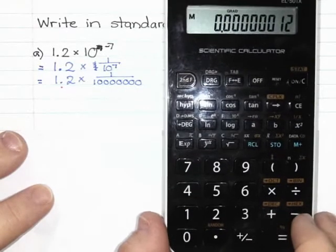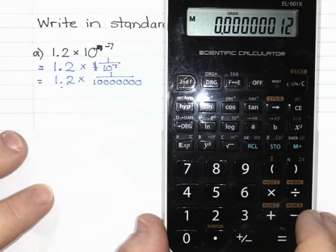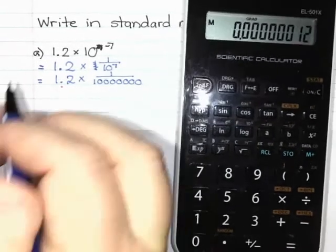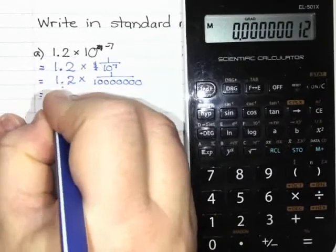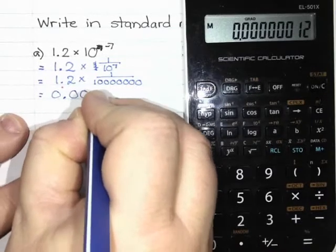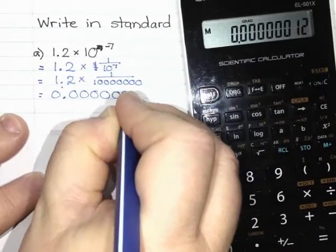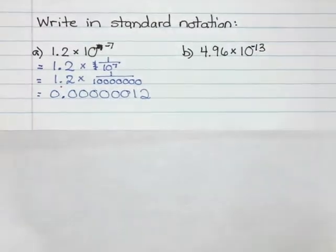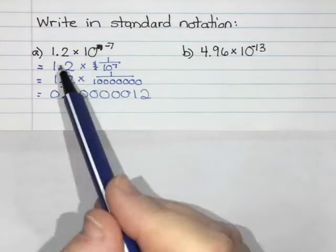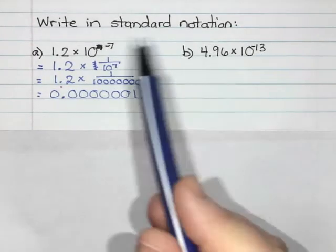This gives me the number 0.00000012. So there's six zeros in front, so 0.00000012.